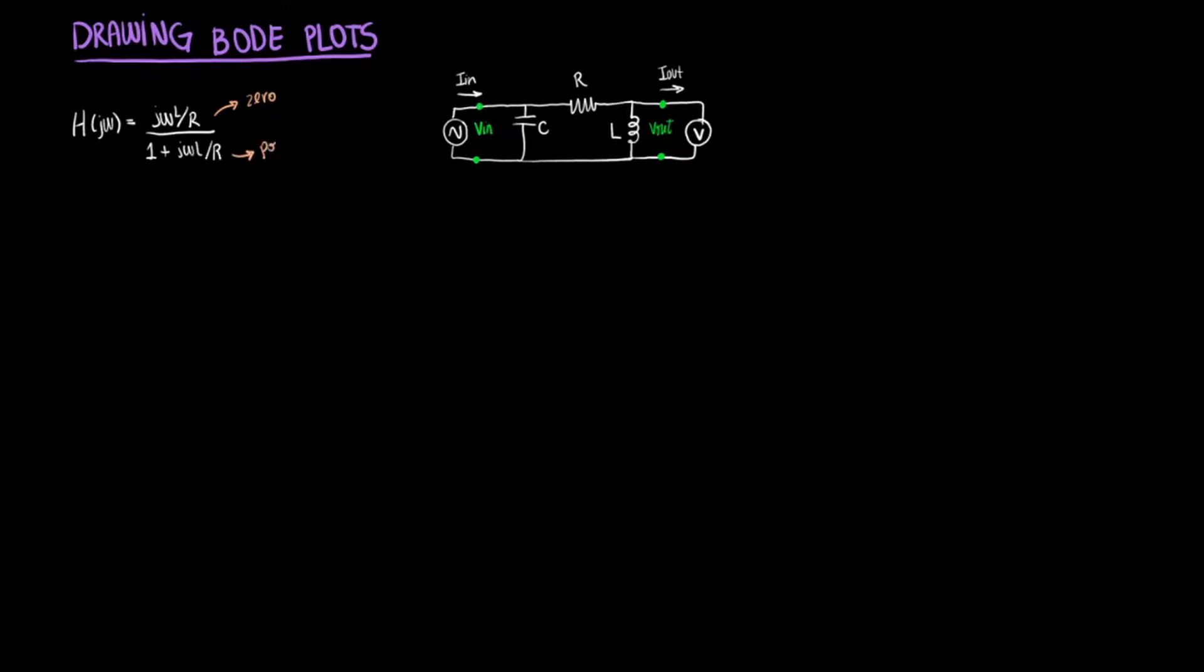Let's start with the zeros. So we can set j omega L over R equal to zero and that gives us the zero rather quickly. We figure out that j omega equal to zero is where we're gonna have one of our zeros, the only zero. Then we can get the pole by setting 1 plus j omega L over R equals to zero and from solving that we get that the pole will be negative R over L.